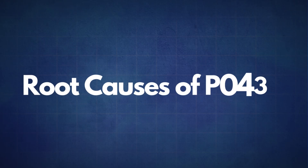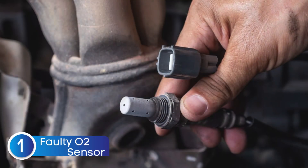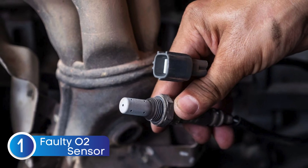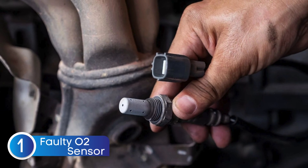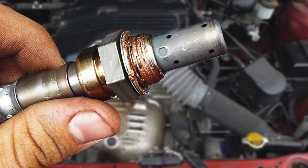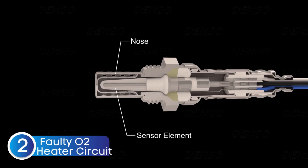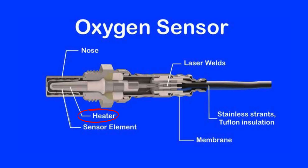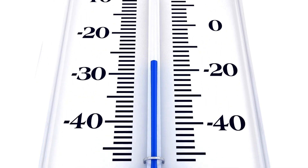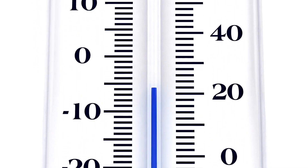Let's discuss some common root causes of the P0430 error code. The first cause is a faulty oxygen sensor — the sensor itself may fail due to wear or contamination. The second cause is a faulty oxygen sensor heater circuit. Oxygen sensors need to reach a specific temperature to work effectively, and a faulty heater circuit can prevent the sensor from reaching optimal operating temperature, resulting in incorrect readings.